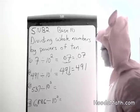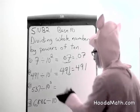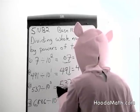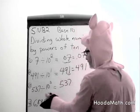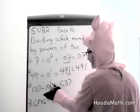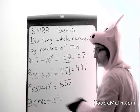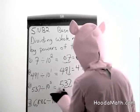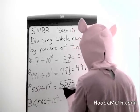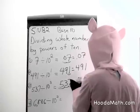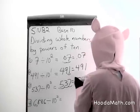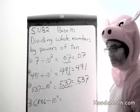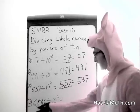537 divided by 10 to the third: we write 537 and move the decimal place three places to the left — 1, 2, 3 — or 537 thousandths.